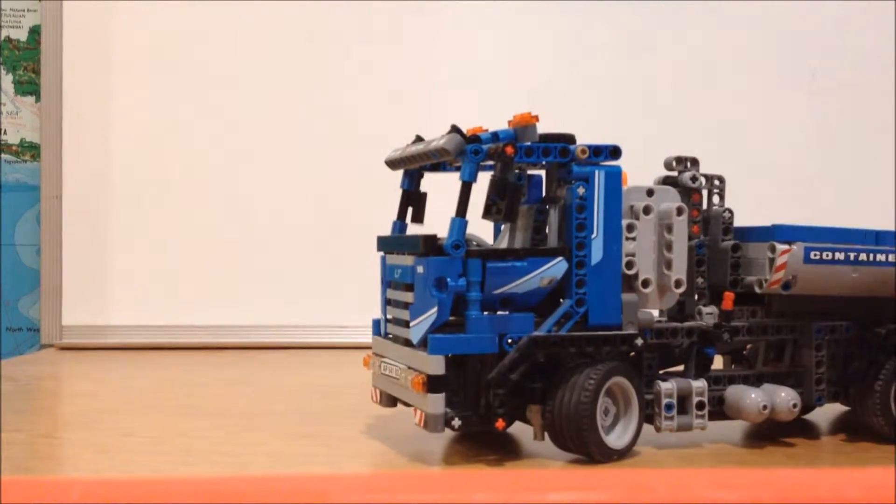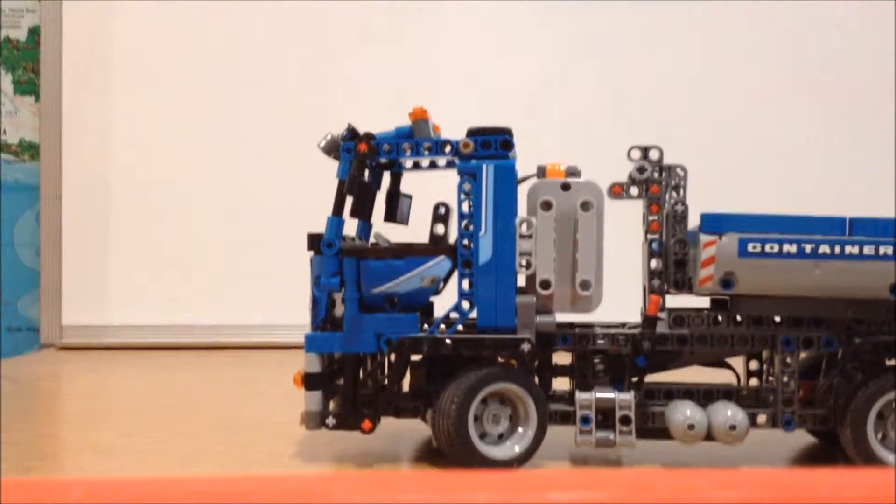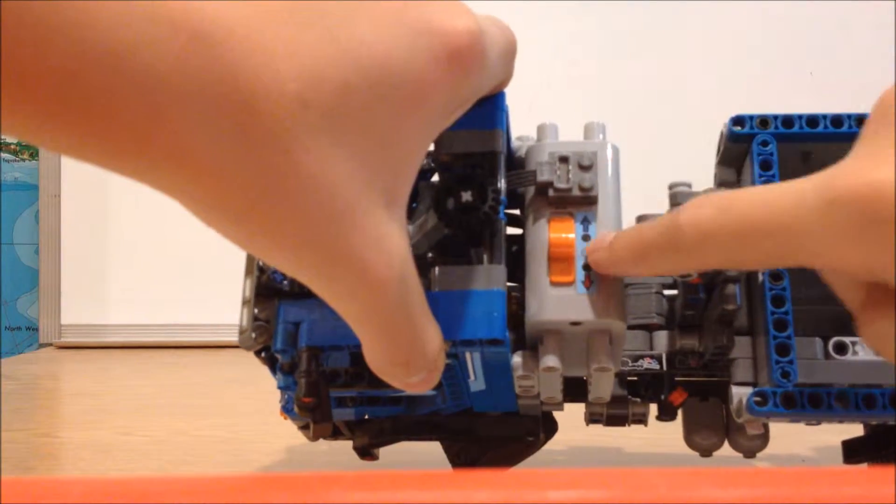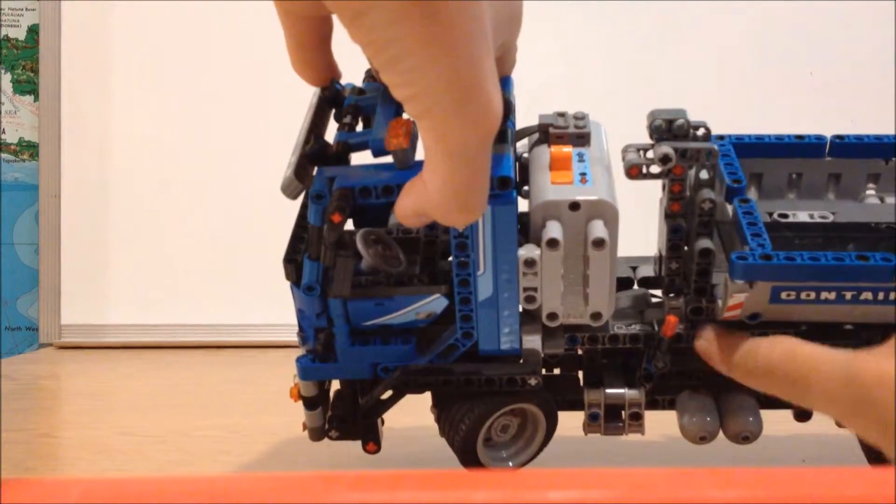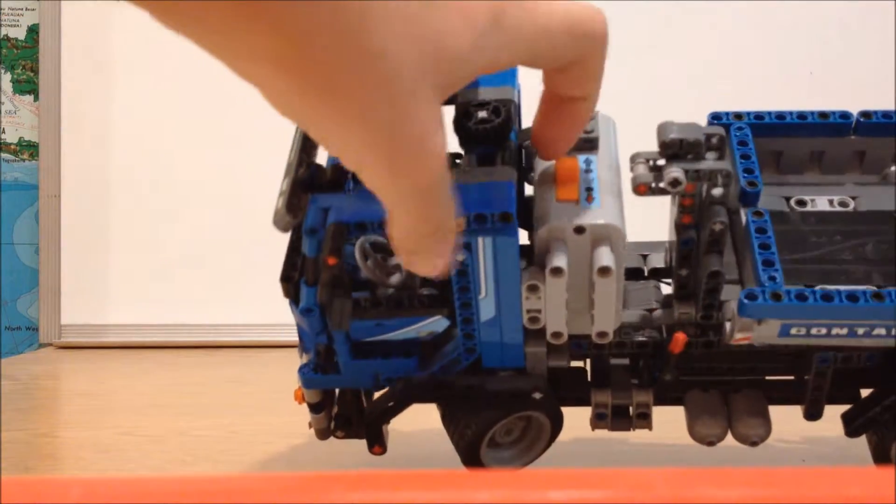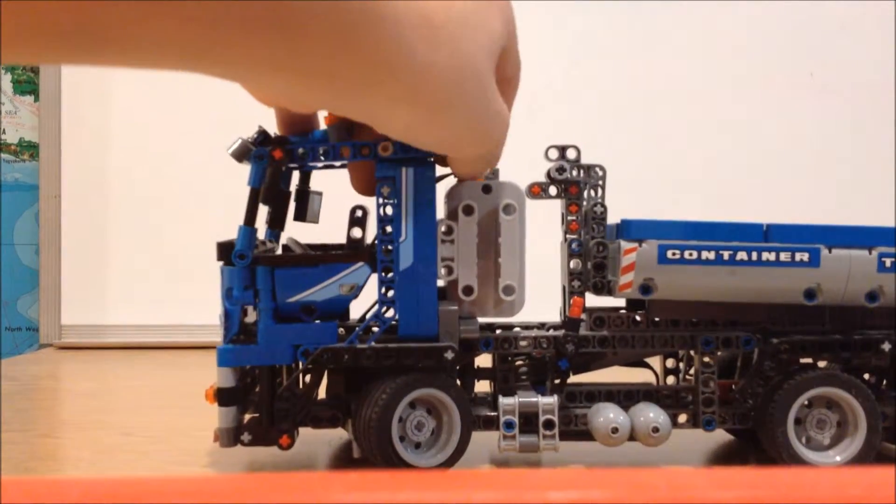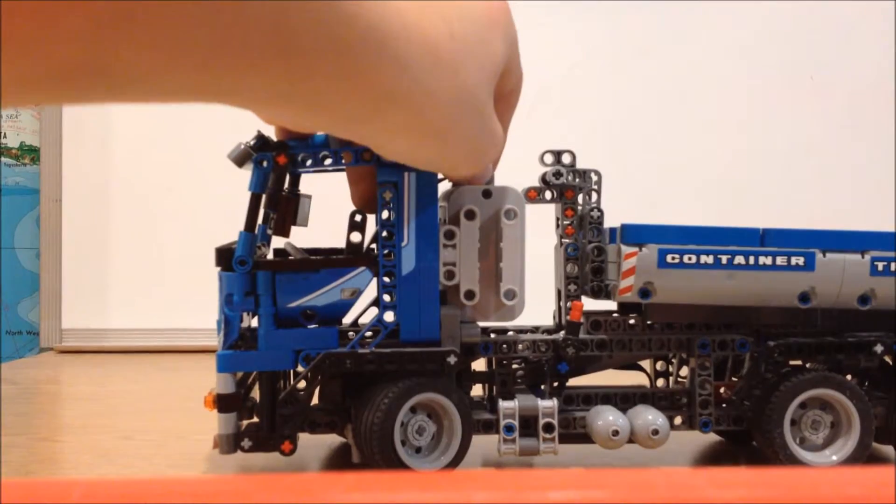And moving to the middle, you have the Technic battery pack right here. This is connected to the motor which is down here that moves this up and down. So I will show you how to move it. So if it clicks like that, it means it can't move any farther.